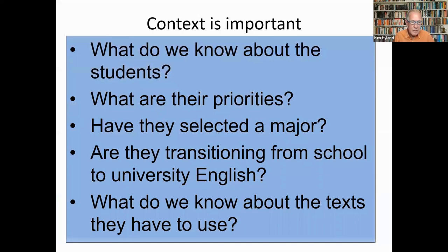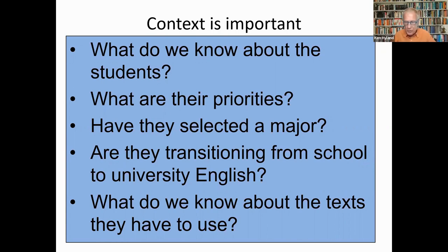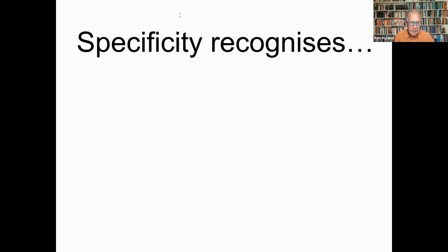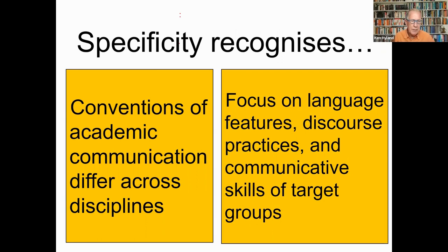Of course, context is going to be important here. What do we know about the students? What are their priorities? Have they selected a major yet, or are they transitioning from school to university English? What do we know about the texts they need to use? There are certainly some register-level features which are useful to students, but I've always been a big fan of getting as close to what students actually need as possible. Specificity recognises that academic conventions differ enormously across disciplines, and so identifying the particular language features, discourse practices and communicative skills of target groups becomes central to teaching English at universities.